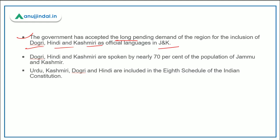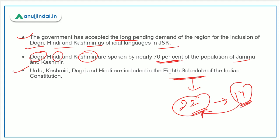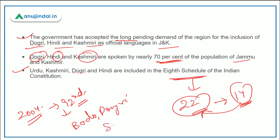These three languages — Dogri, Hindi, and Kashmiri — are spoken by nearly 70 percent of the population of Jammu and Kashmir. Regarding the Eighth Schedule of the Indian Constitution, there are currently 22 languages. Initially when the constitution was made there were 14 languages, and through subsequent amendments this number increased to 22. The last amendment was the 92nd Amendment Act of 2004, under which four languages — Bodo, Dogri, Santhali, and Maithili — were included in the Eighth Schedule.